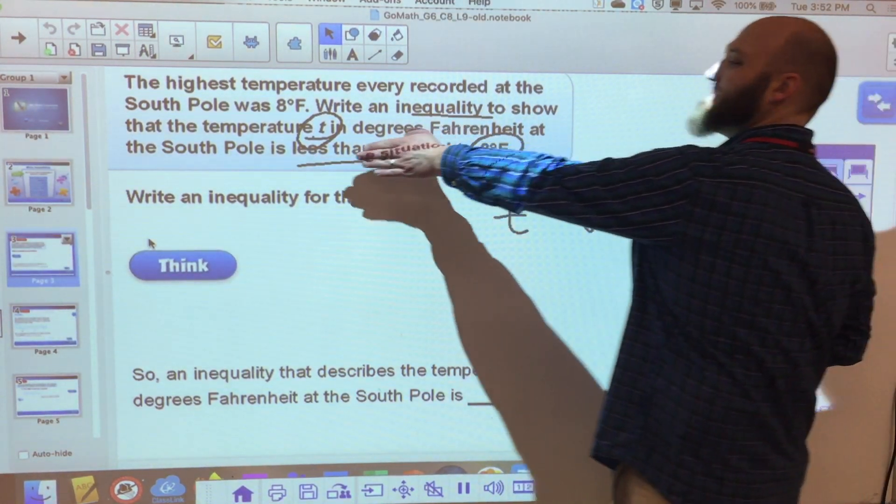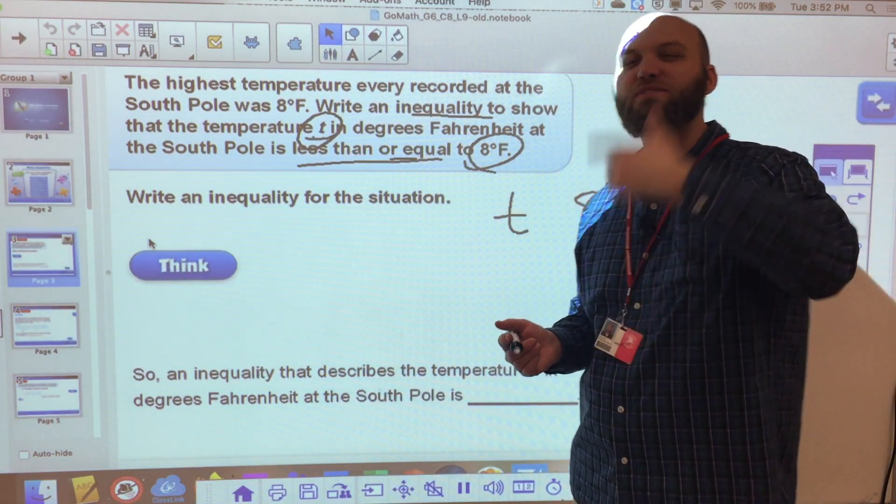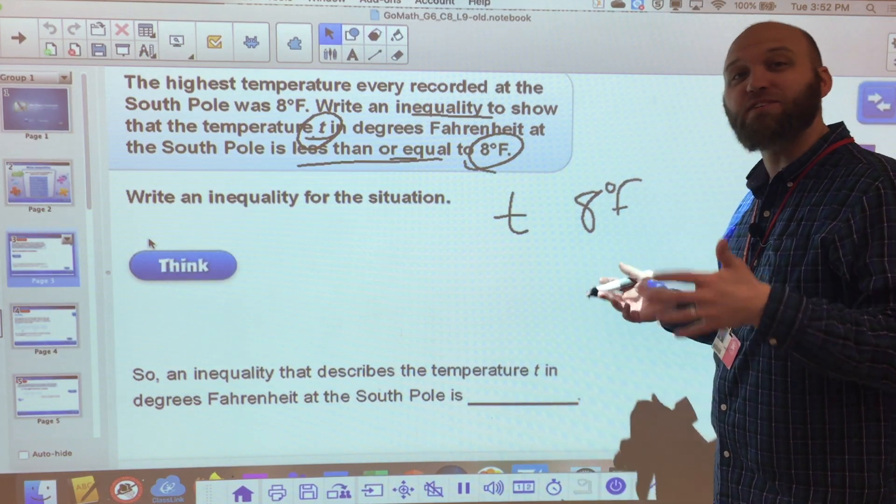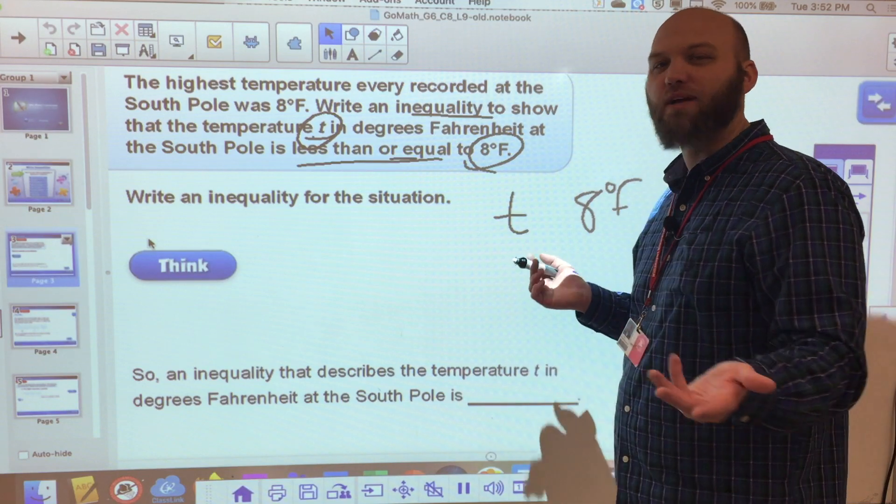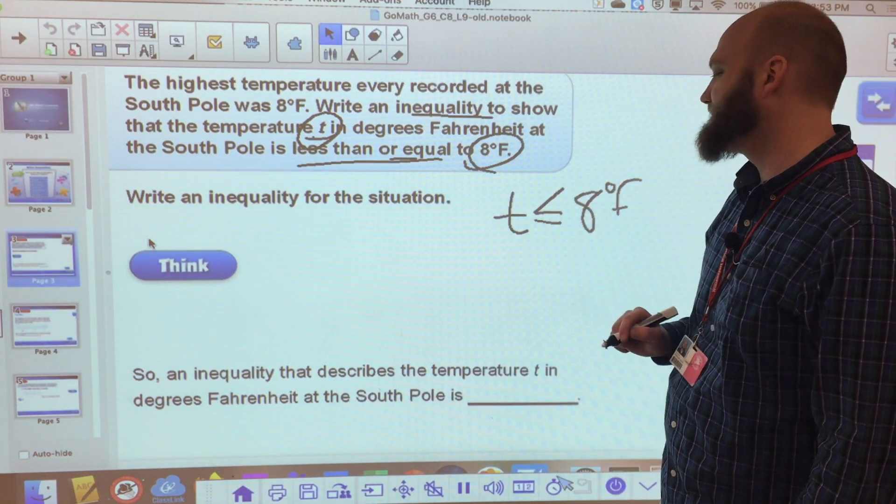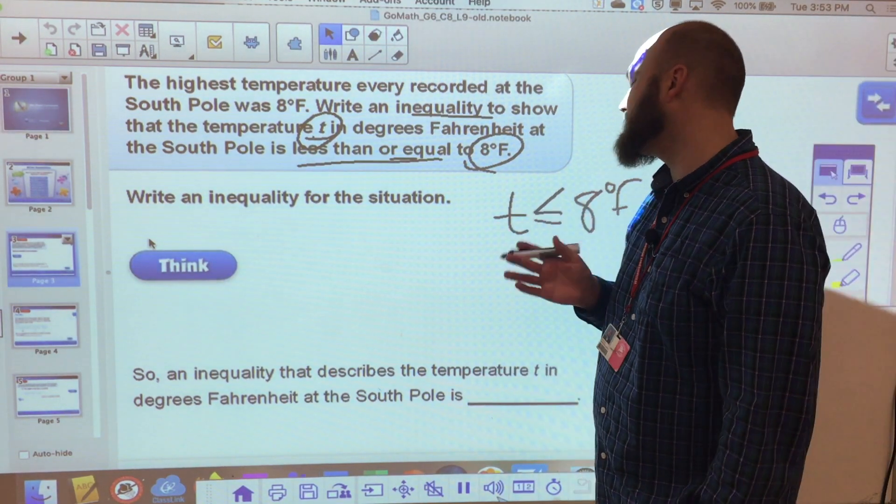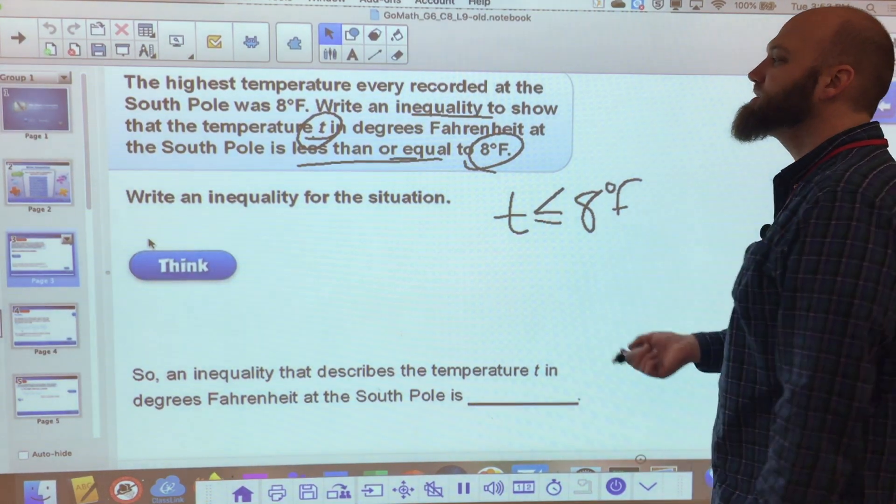And I need it to be less than or equal to. If I didn't have this specific less than or equal to, I could say the highest temperature ever recorded. This will go back to my fever, right? Does that mean that the highest temperature ever recorded was 8 degrees Fahrenheit? Could it be 8 degrees Fahrenheit? Yes, that was the highest. That was the record. I need less than or equal to. So an inequality that describes T temperature in degrees Fahrenheit, T is less than or equal to 8 degrees Fahrenheit.